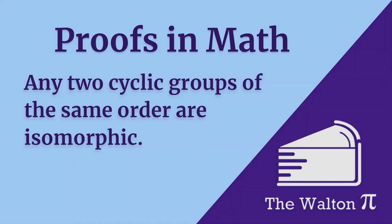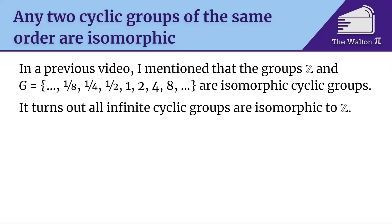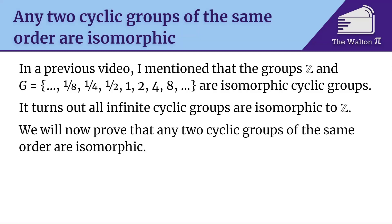Welcome to the Walton Pi. Today we're going to go over a proof that will show that any two cyclic groups of the same order are isomorphic. In a previous video I mentioned that the groups Z and the set containing all powers of two are isomorphic cyclic groups. It turns out that every infinite cyclic group is going to be isomorphic to the integers. So now we're going to prove that any two cyclic groups of the same order are isomorphic, dealing with both the finite case and the infinite case.